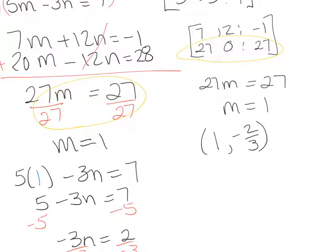I hope this helps illustrate how the elimination method aligns to the matrix method. In the next video, we're going to talk about row-reduced echelon form, or Gauss-Jordan elimination. Hopefully this helps with the understanding between elimination and how it aligns to the matrix method. Thank you for joining me.